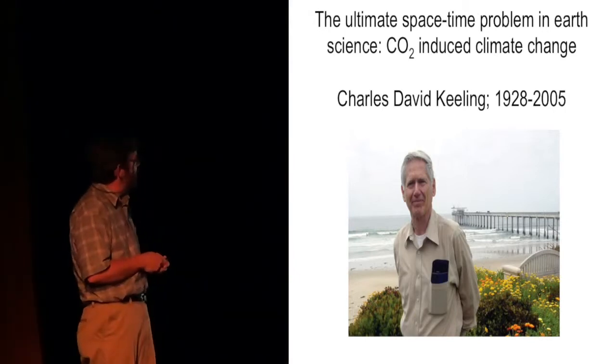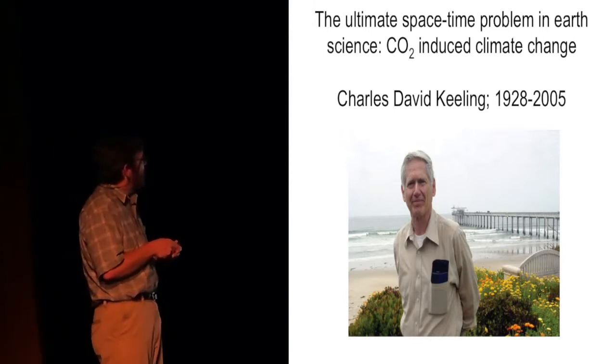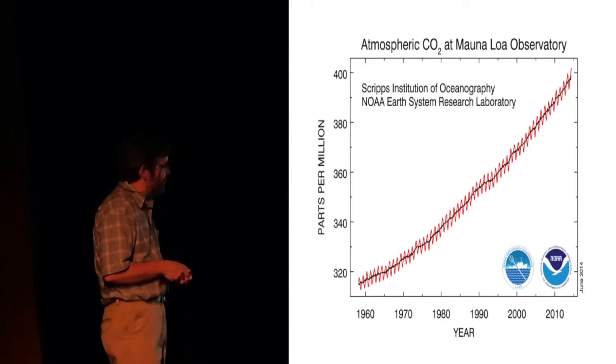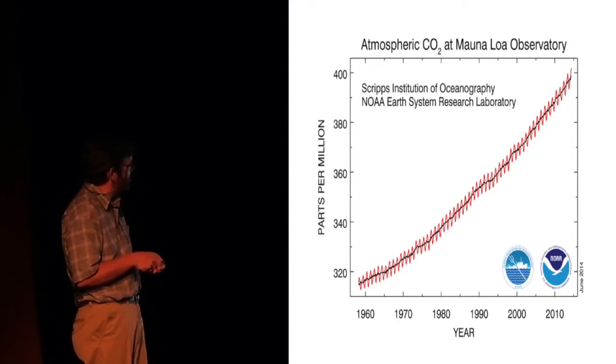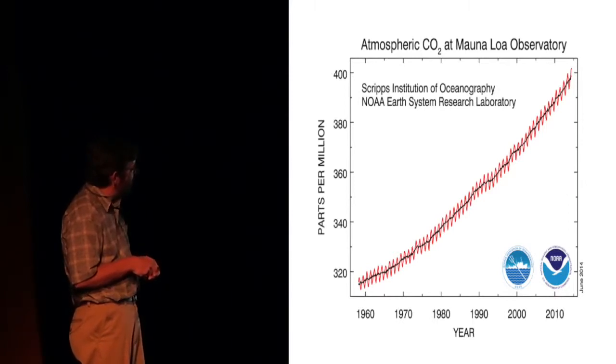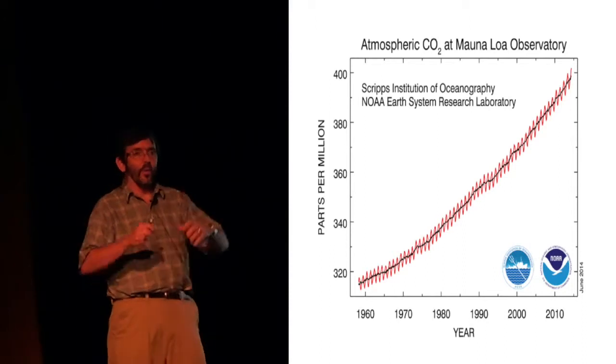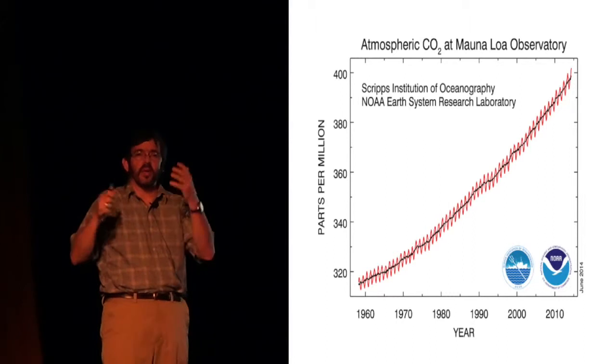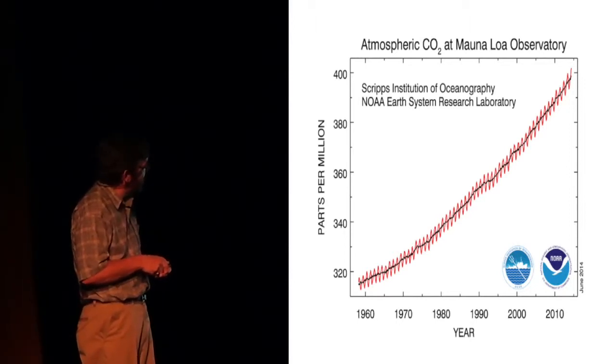My last vignette here is about Charles David Keeling, who was at Scripps when I was there. He's gone now. But he started basically working on the ultimate space-time problem. And that is CO2-induced climate change. And I'm sure many, if not all of you, have seen this. He started in the 50s. And then NOAA took it over later as he got older. And they've run it henceforth. And there are some aspects of this that were really fascinating. If you take the mean, you can see that the slope was increasing over time. So this is on top of the Mauna Loa Observatory out of Hawaii. But there were some very fundamental questions about why is this line jiggling like it is.